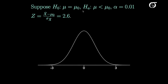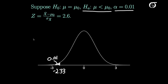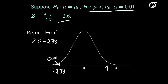On the other hand, if our alternative is that mu is less than mu0 with alpha of 0.01, we put that entire alpha in the left tail. The area in the left tail is 0.01, and the Z-value that makes that happen, rounded to two decimal places, is minus 2.33. So we reject the null hypothesis if the observed Z-value is less than or equal to minus 2.33. If the observed Z-value is 2.6, which falls in the right portion of the distribution, we do not reject the null hypothesis.